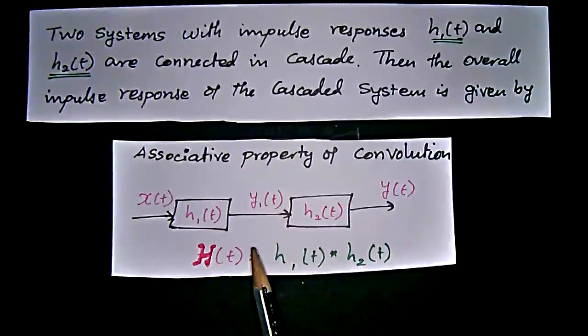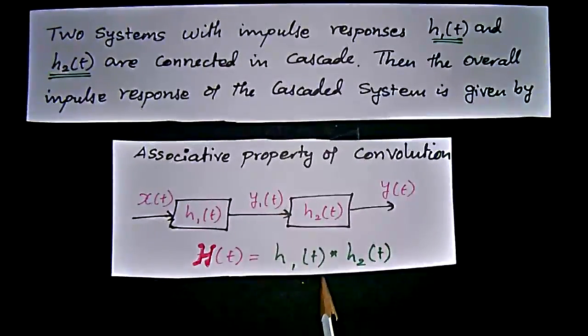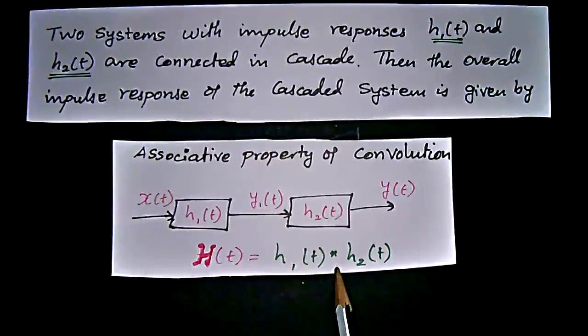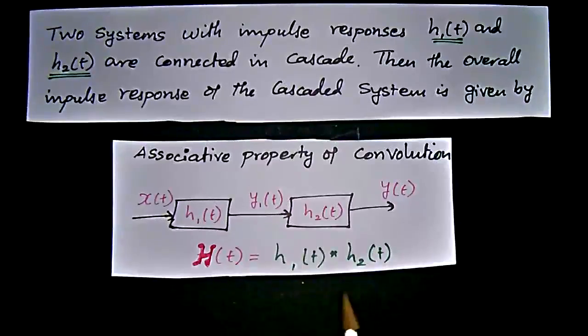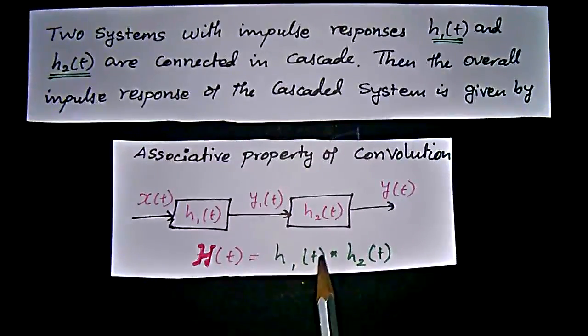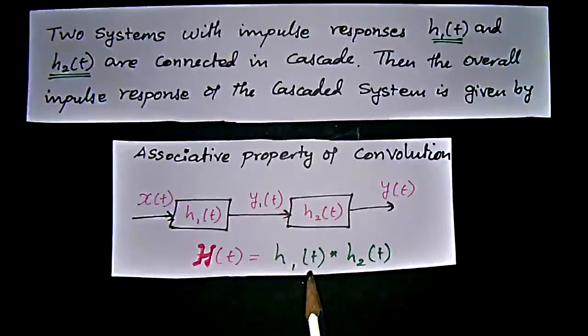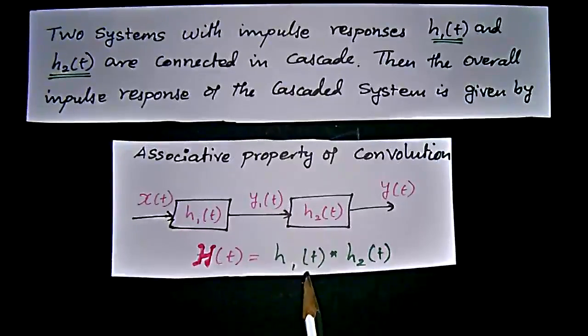We should say cascade. The formula is h₁(t) convoluted with h₂(t). When we are minimizing the two system impulse responses into a single response...